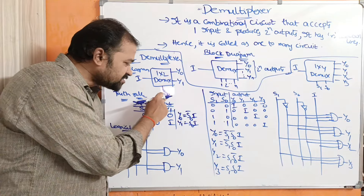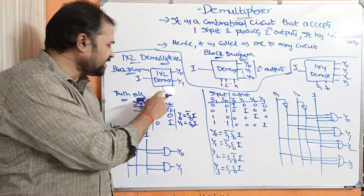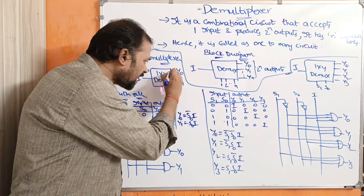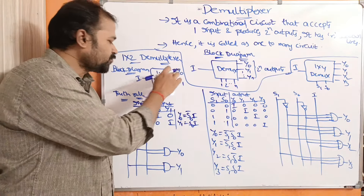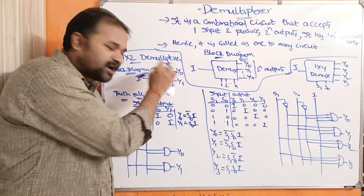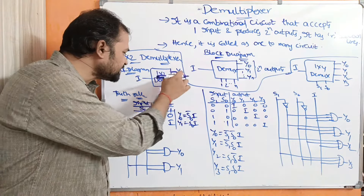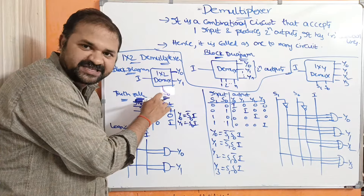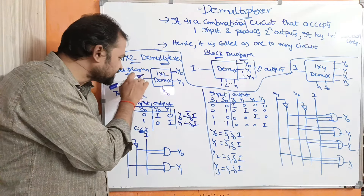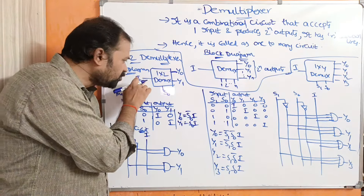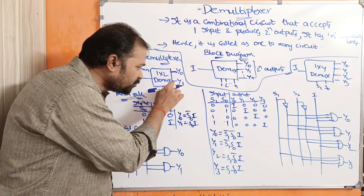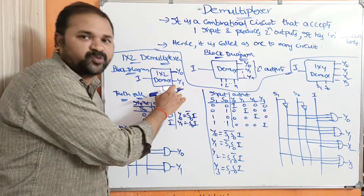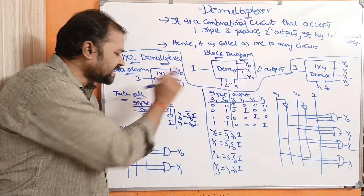If s0 is 0, then the input will be connected to output y0, so we get y0 as the output — y0 is nothing but the corresponding input i. If s0 is 1, then the input will be connected to output y1, so y1 will be displayed as the output, and y1 is nothing but the input i.